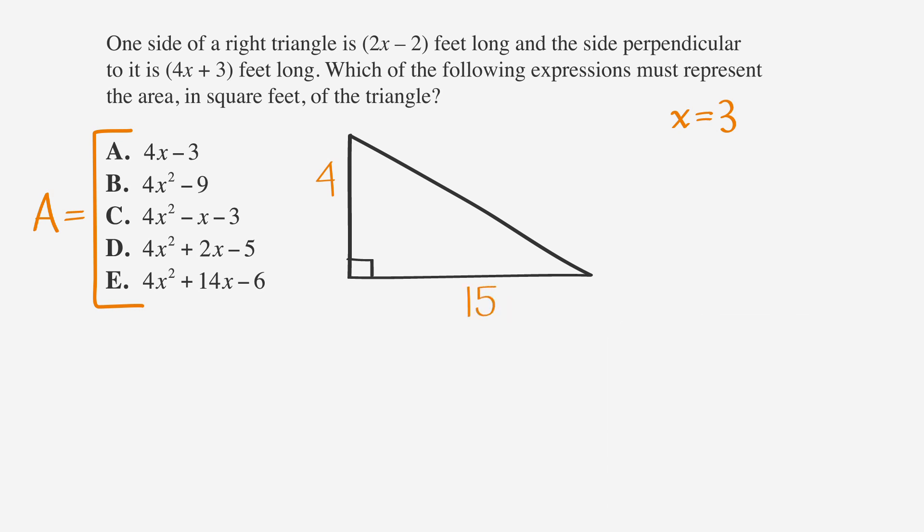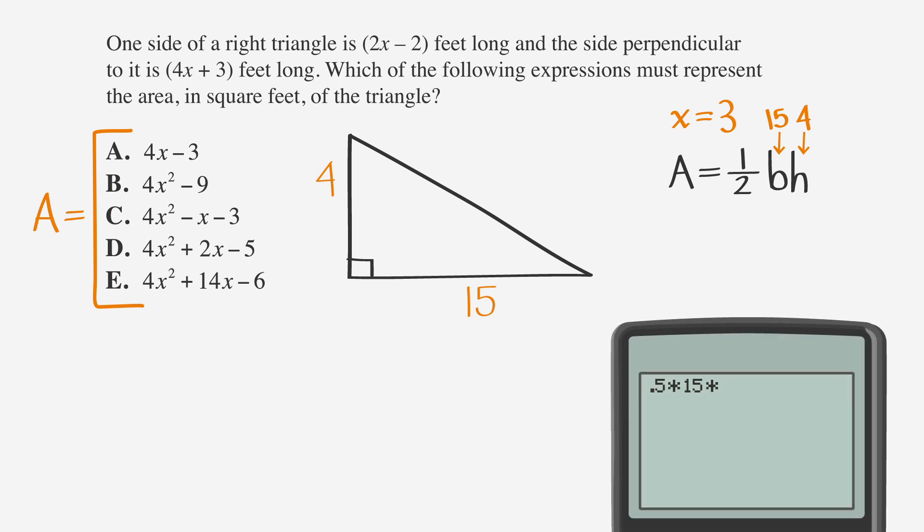Now, we can use the formula for the area of a triangle. Area equals one-half the base times the height, and substitute the lengths of the legs. Write 15 just above the b in base and 4 above the h for the height. If you plug it into your calculator, you find that one-half times 15 times 4 equals 30.